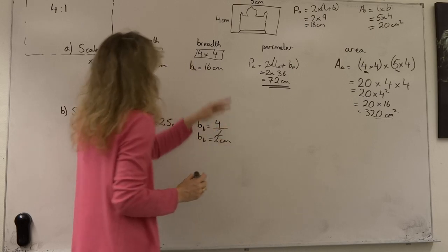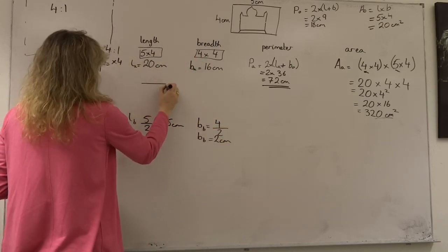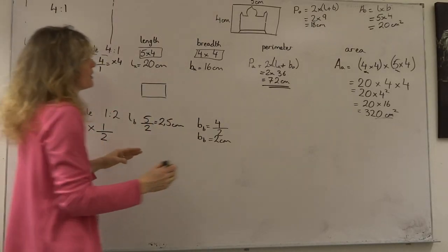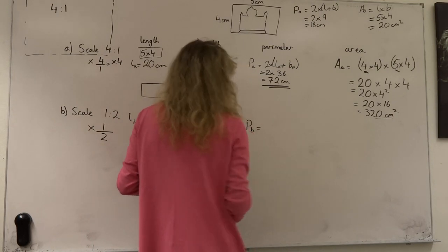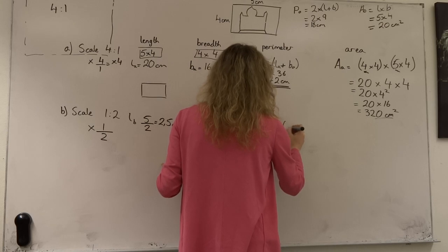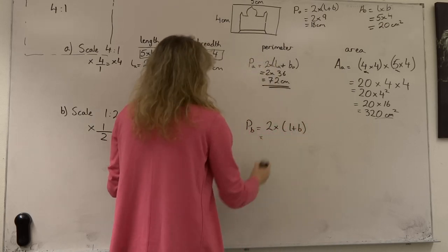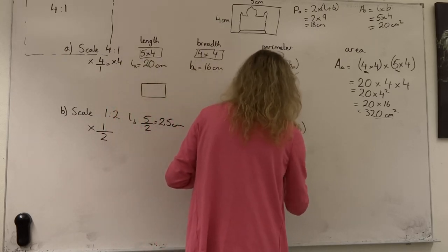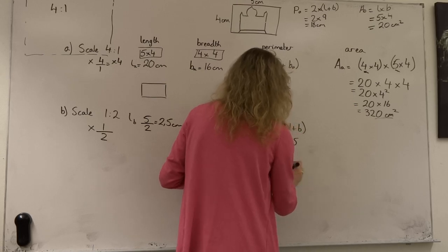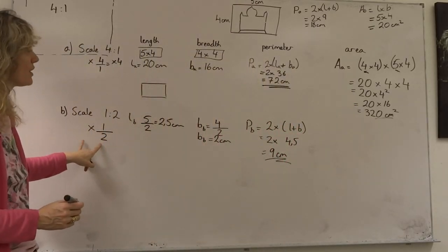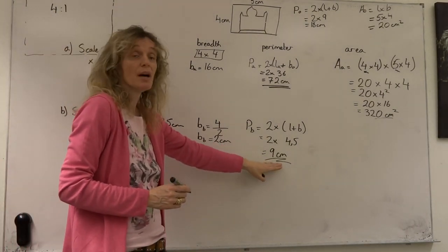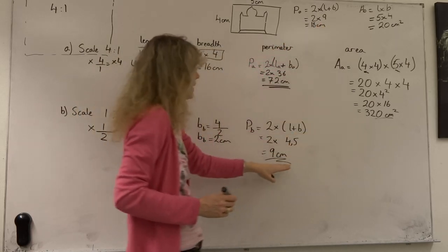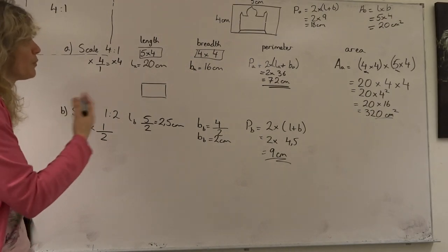So the breadth of our new sketch would be 2 centimetres. How does this affect the perimeter? The perimeter of sketch B would be 2 times (length plus breadth), which is 2 times (2 plus 2 and a half), giving 2 times 4 and a half, which is 9 centimetres. When we're applying a factor of a half, our perimeter is also halved — the original 18 centimetres becomes 9 centimetres, which is what we'd expect for perimeter.